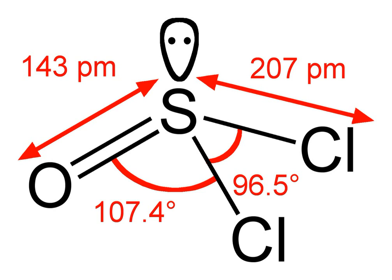Thionyl chloride is sometimes confused with sulfuryl chloride, SO2Cl2, but the properties of these compounds differ significantly. Sulfuryl chloride is a source of chlorine whereas thionyl chloride is a source of chloride ions.